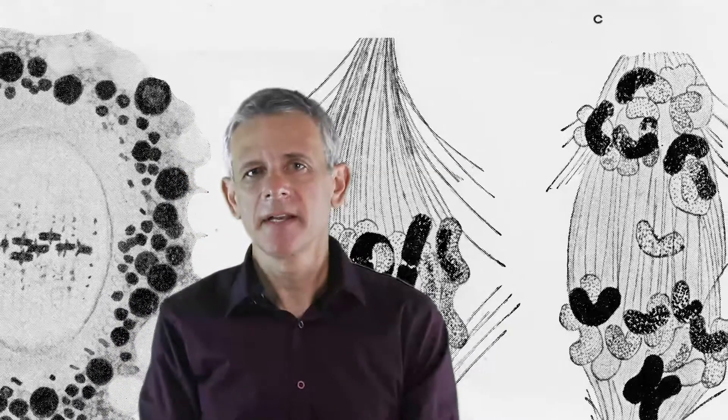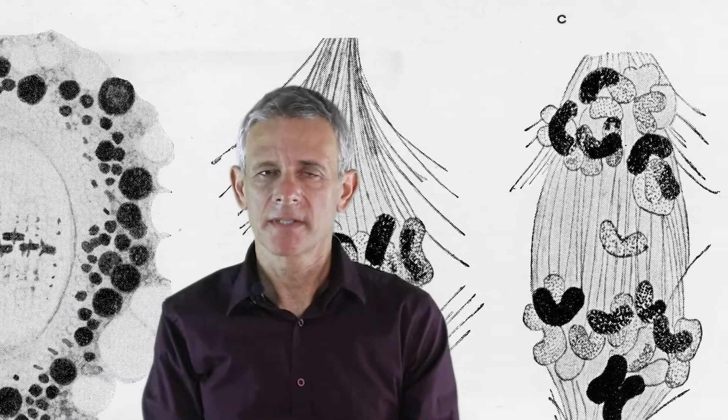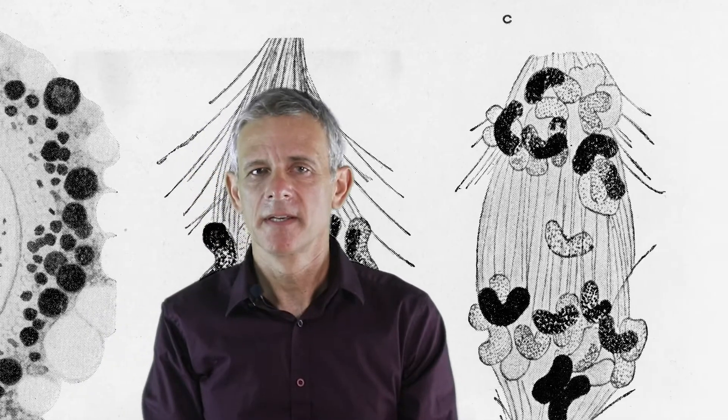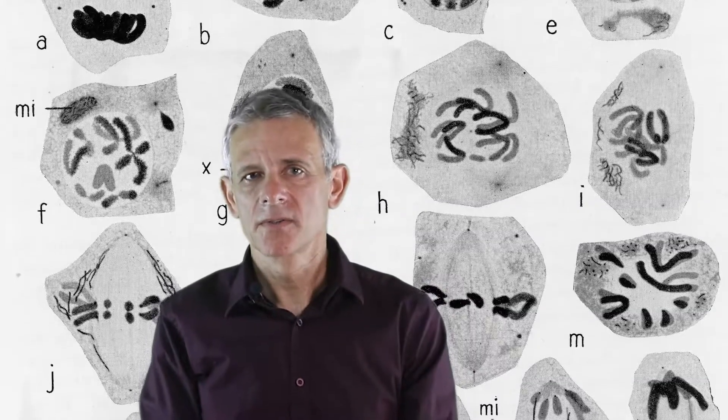Mitosis yields two genetically identical cells. Meiosis, in contrast, yields four genetically different cells. These differences are caused due to two reasons.